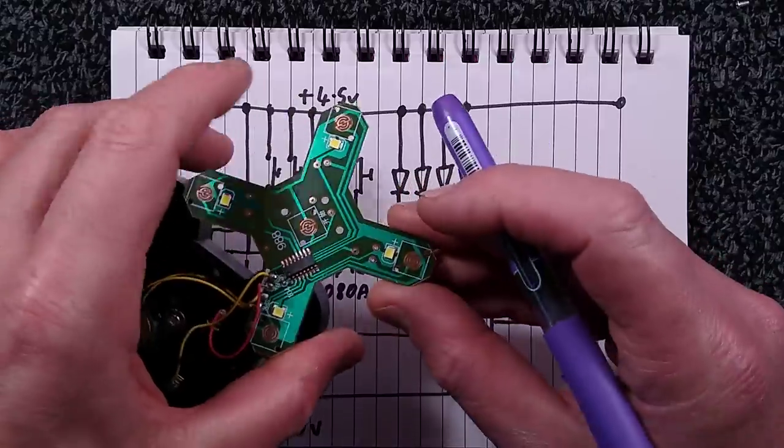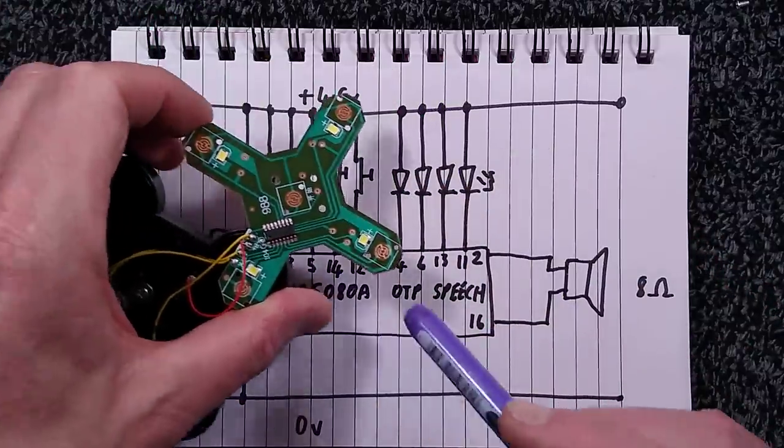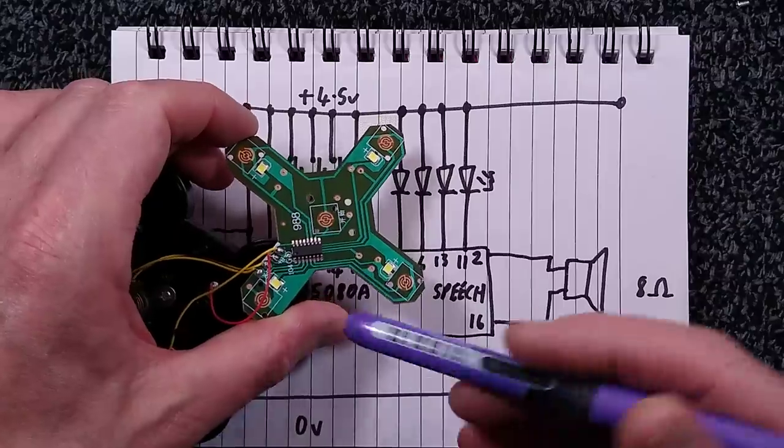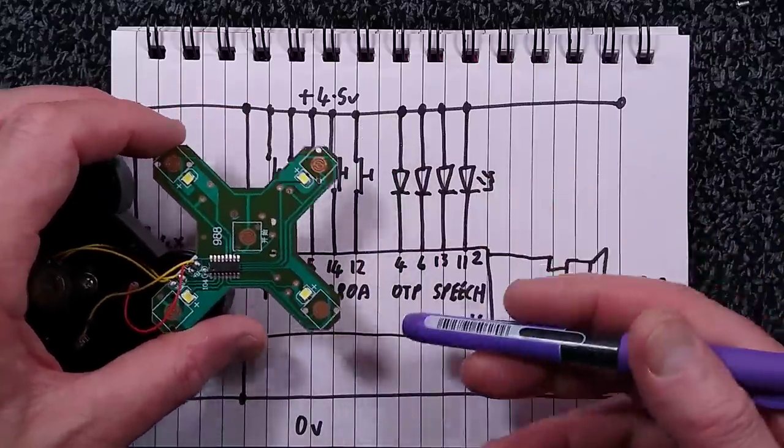The circuit board has a chip that turns out to be a TRSP5080A. This is a microcontroller with built-in speech facilities, so they can store speech. In this case, they've stored the applause samples and also the noise when you actually lose.